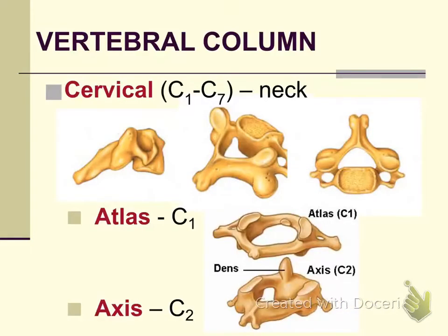The vertebral column is the spine or backbone. It is made up of 22 vertebrae. The first seven vertebrae are called the cervical vertebrae, numbered with the most superior being C1 and the most inferior being C7. These make up the bones of the neck region. A distinct feature of the cervical vertebrae is that they have a small body, and these holes called the transverse foramen point straight up and down, unlike the other vertebrae.